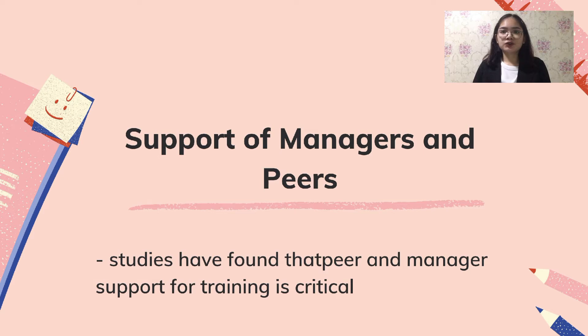Studies have found that peer and manager support for training is significant, along with the employee's enthusiasm and motivation to attend training, because it has a strong influence on the employee's decision to participate. Key factors to success include a positive attitude among peers and managers about participation in training activities, managers' and peers' willingness to tell trainees how they can more effectively use knowledge, skills, or behavior learned in training, eagerness to pursue trainees by telling them that the knowledge gained will be beneficial in the workplace, and the availability of opportunities for trainees to use training content in their job.